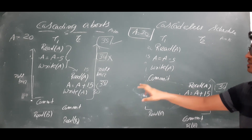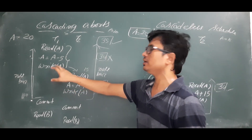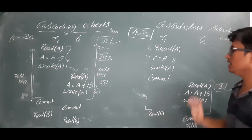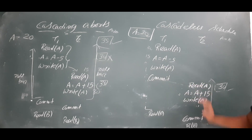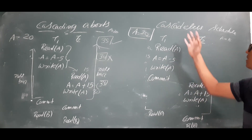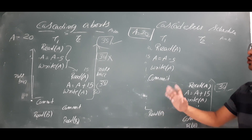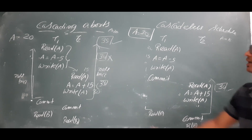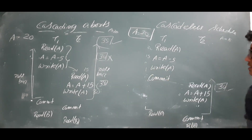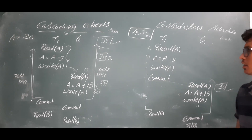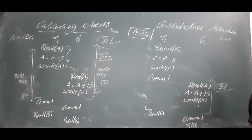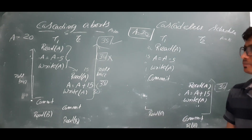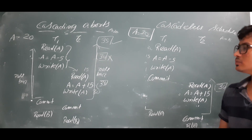In the cascading abort case you are reading from transaction one which was not committed — no commit operation had happened before you read. But if you read after a commit, it is safe and it is a cascadeless schedule. In the cascading abort schedule it gives incorrect results, whereas in the cascadeless schedule it gives correct results. Now I want to ask: is this cascadeless schedule also a recoverable schedule?